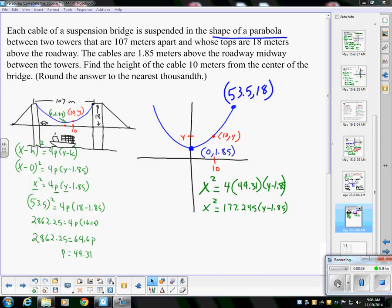I minimized some things and pushed some things around from what you just saw. But the bottom line is this: we want to know what is y when x is 10. So 10² = 177.245(y - 1.85). There are several ways to do this algebraically.